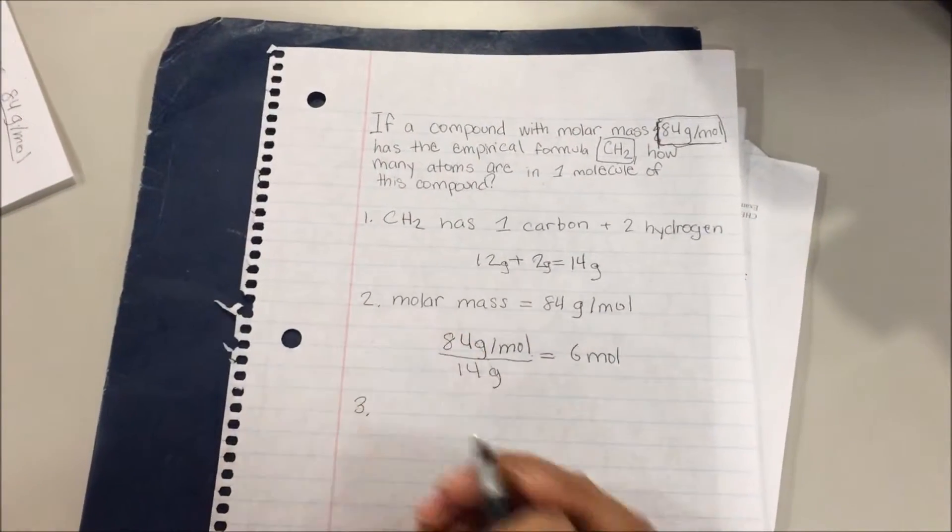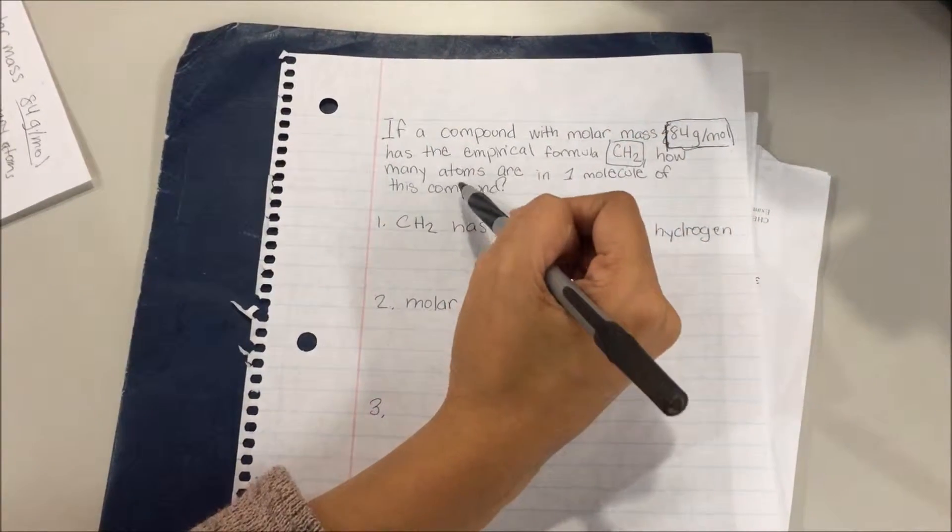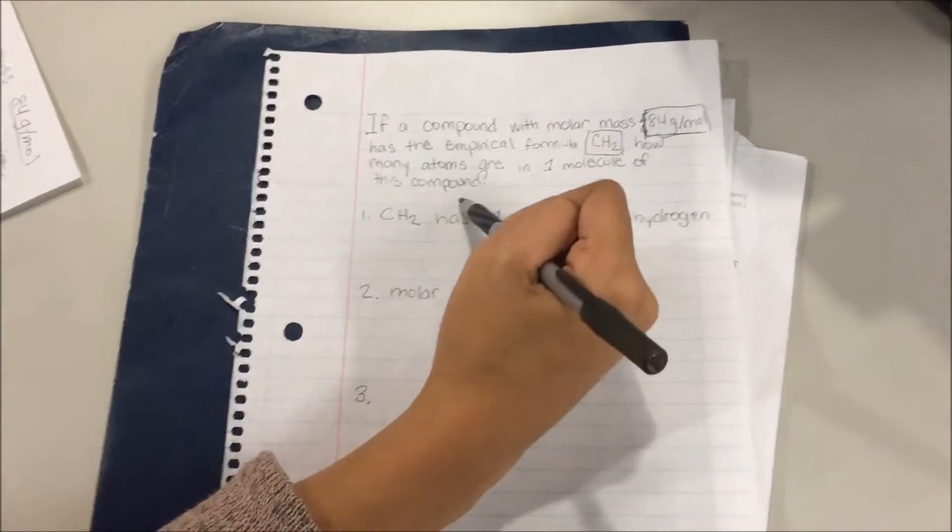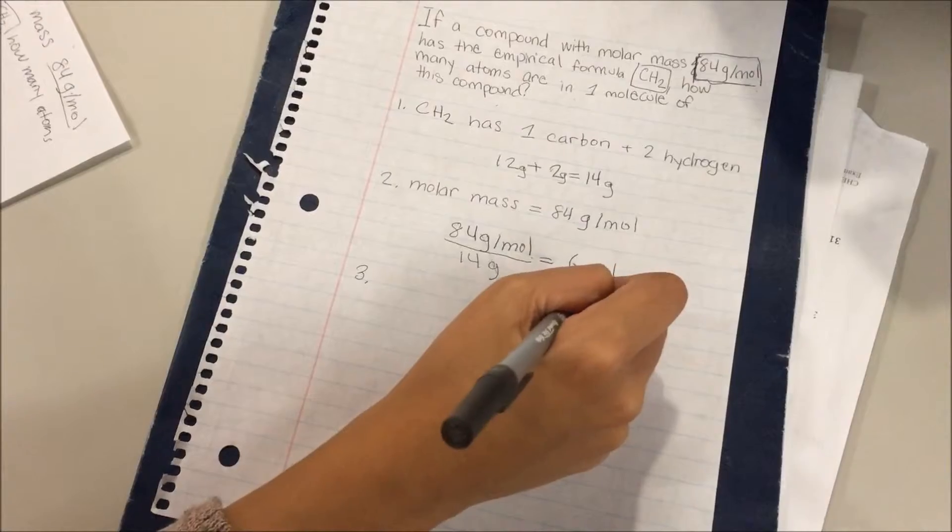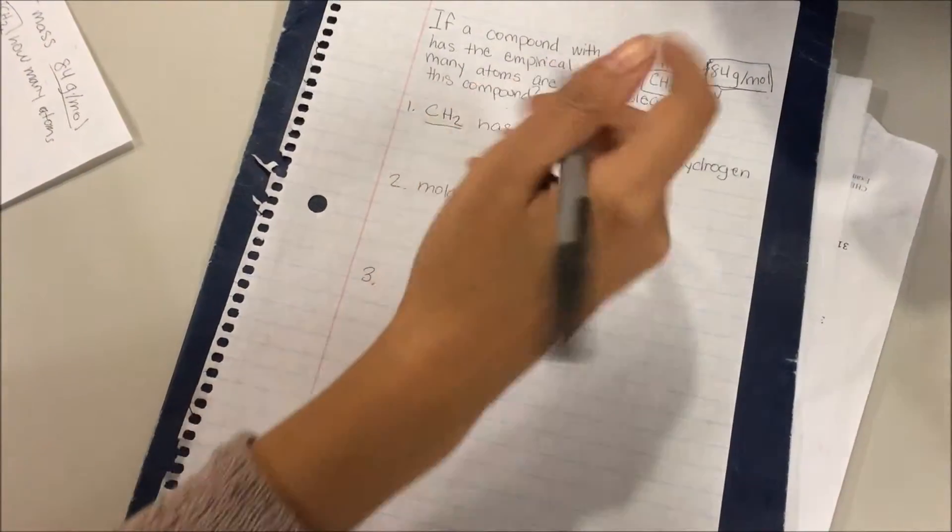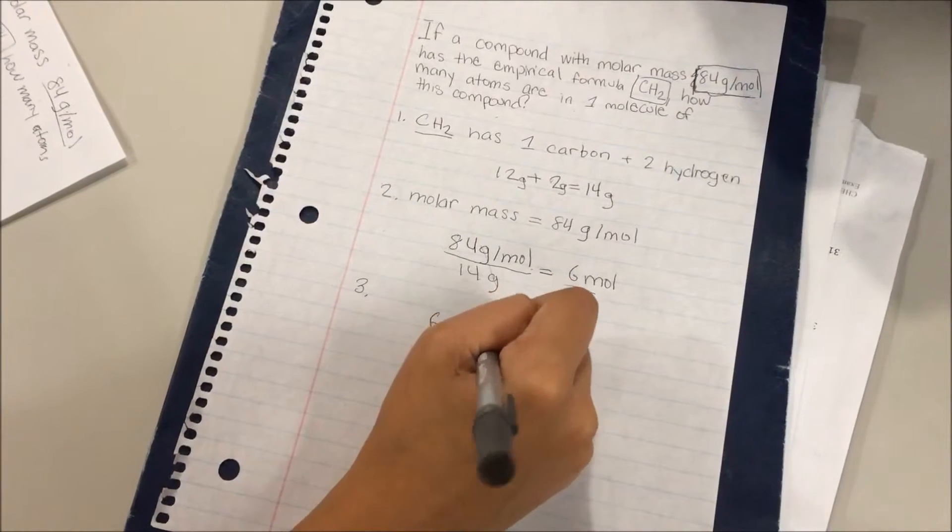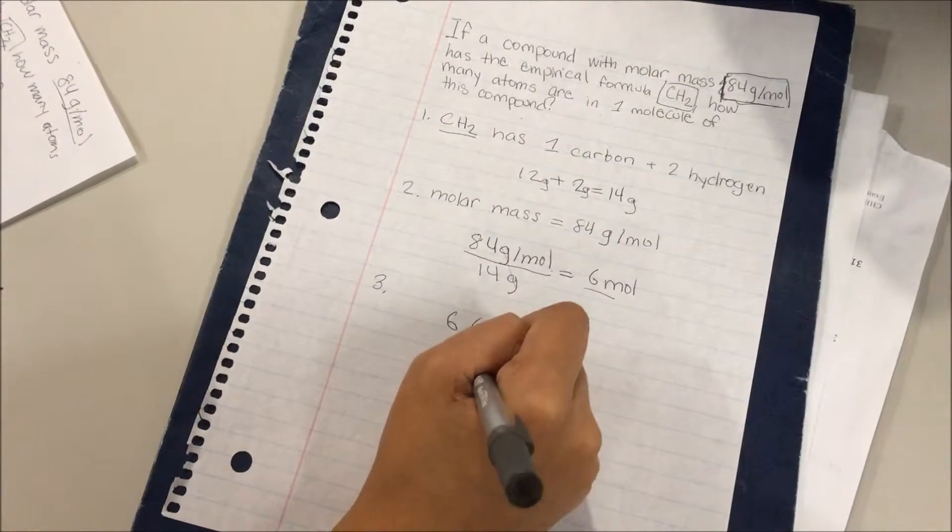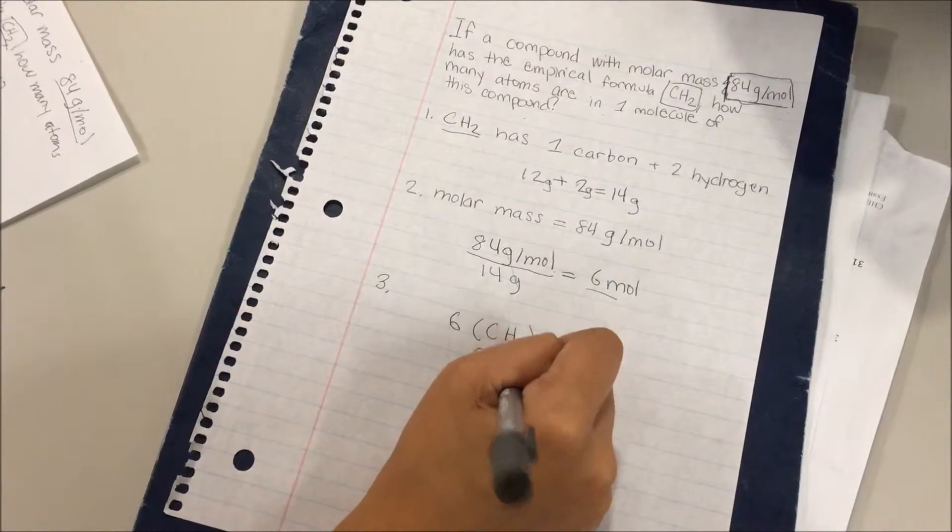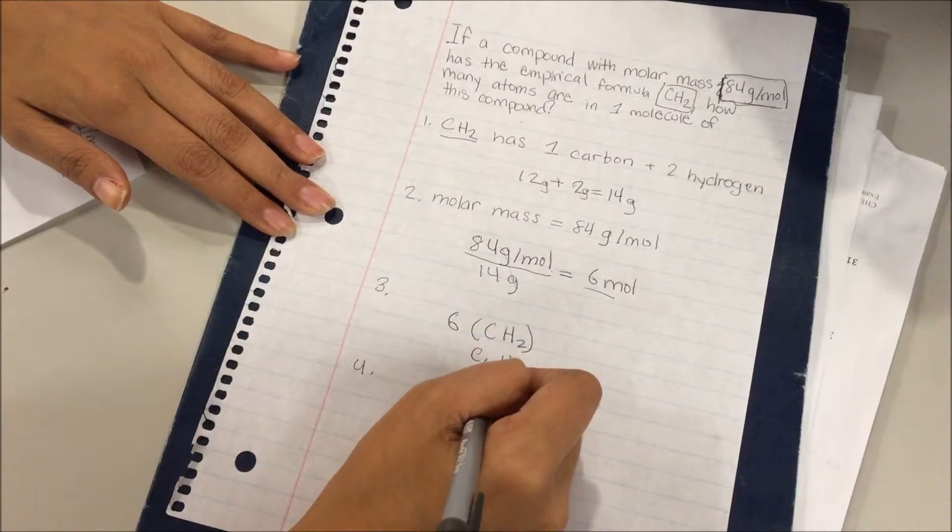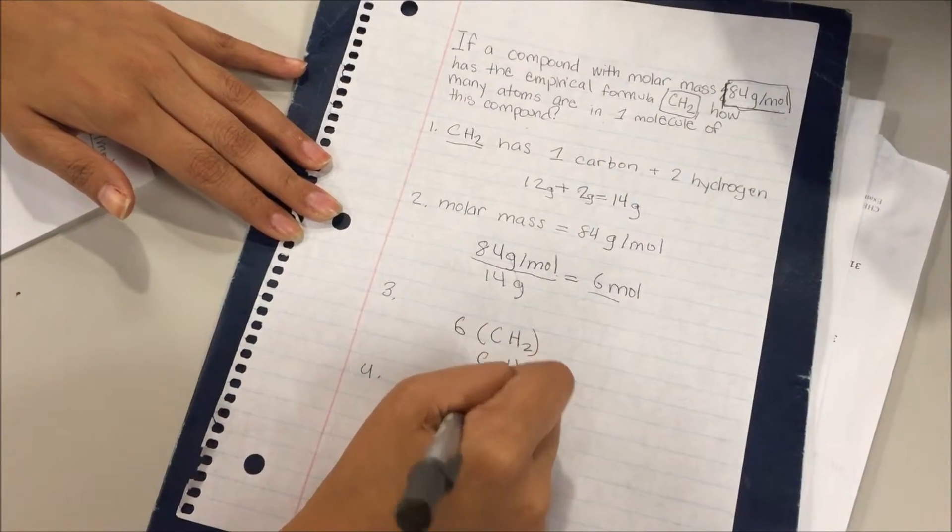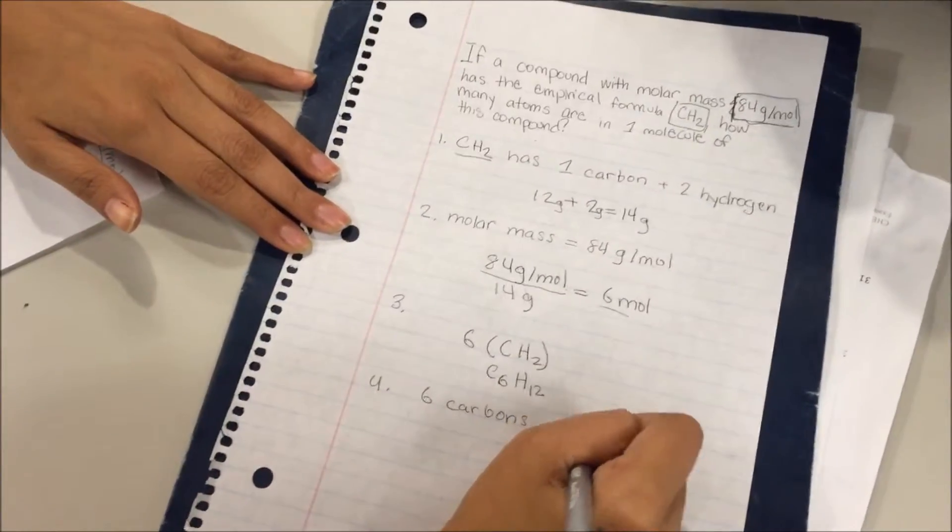But what does this question want? It wants us to find out how many atoms are in one molecule of this compound. We're not there yet. We have to find the molecular formula by multiplying this 6 to this CH2. So it's 6 times CH2, which is C6H12. We know that there's 6 carbons and 12 hydrogens.